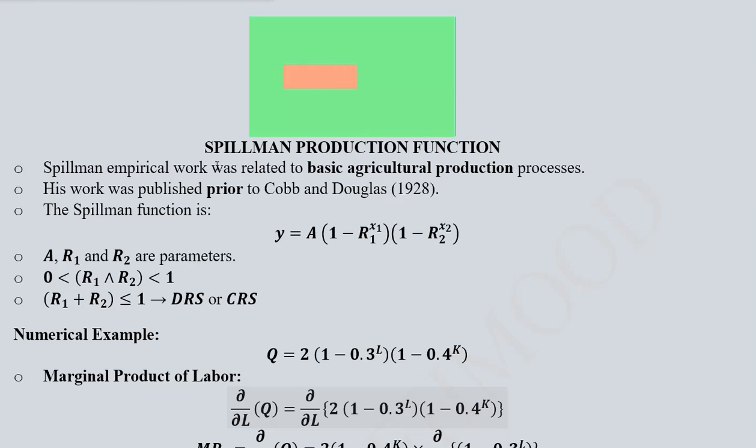It is based upon the empirical work of Spillman that he undertook on basic agricultural production processes. His work was even prior to the work of Cobb and Douglas that was done in 1928. Spillman did his work in 1923 and 1924.